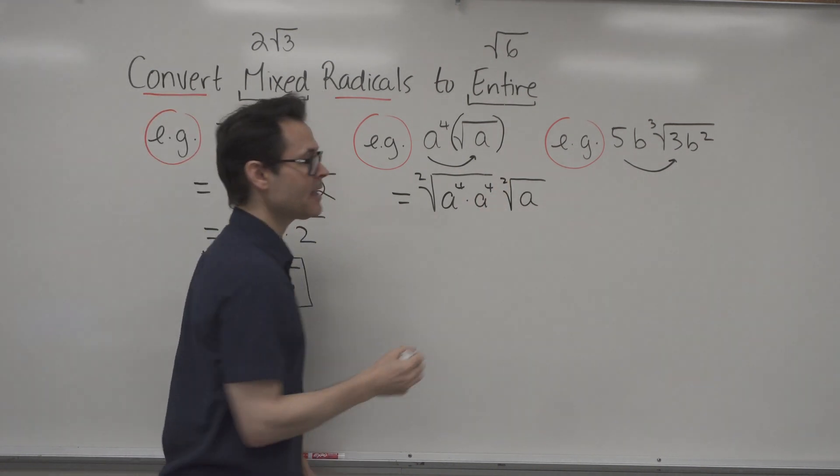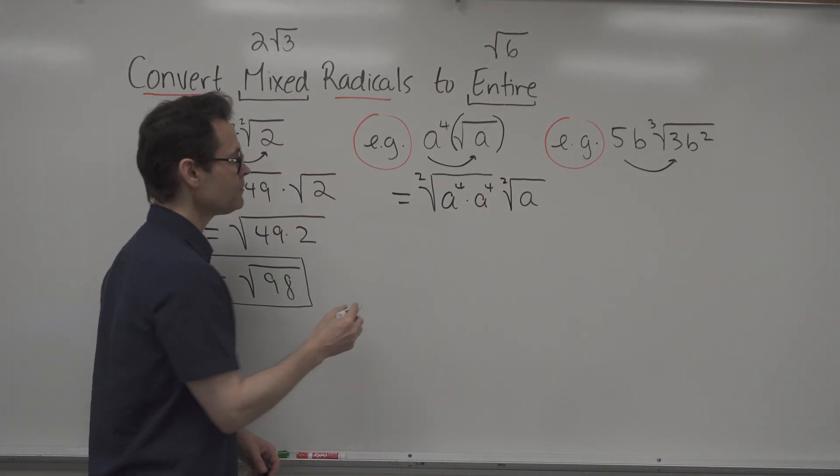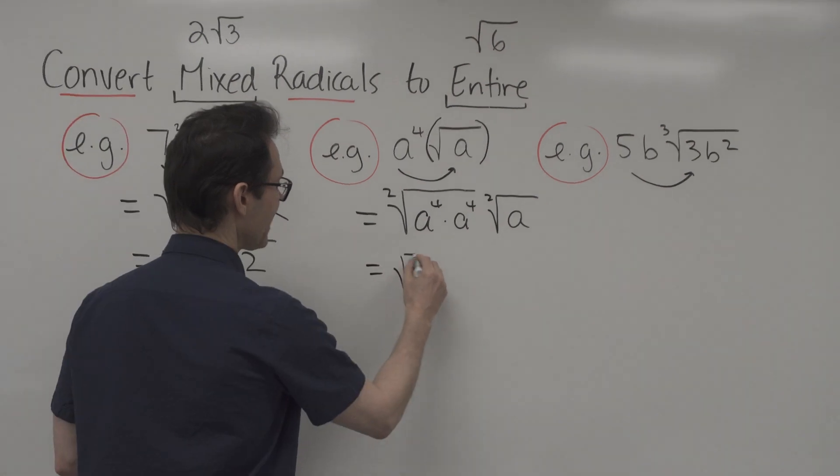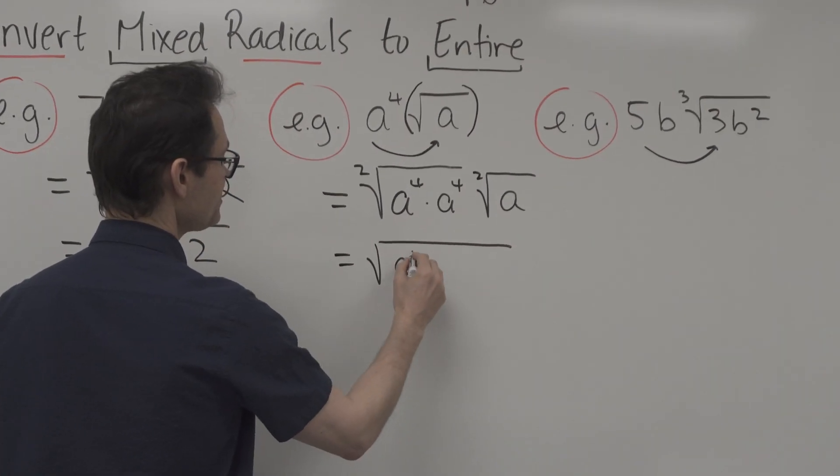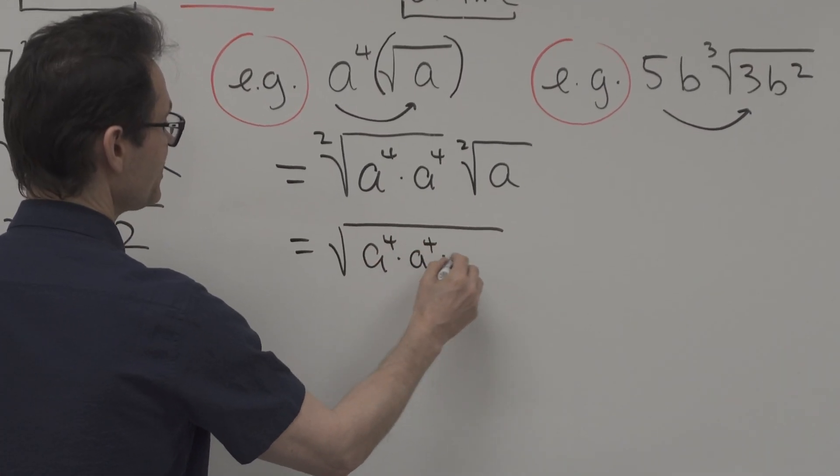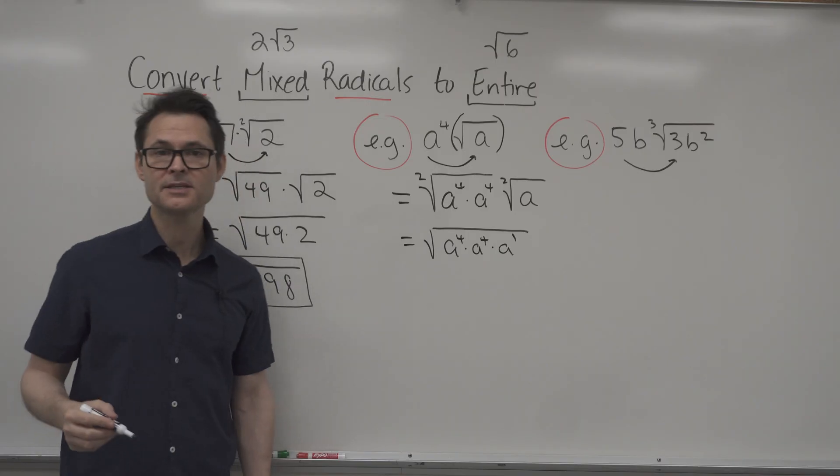And again, if the number isn't indicated, the index is 2 for square root, then I can put them under one radical, so that's A to the 4 times A to the 4 times A. Well, A to the 1. A is A to the 1.